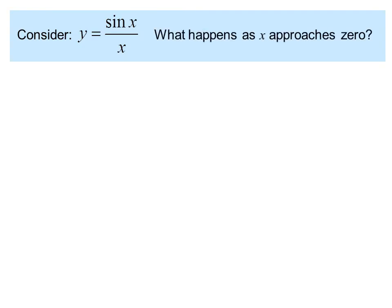Consider y equals sine x over x. What happens as x approaches 0? We see that we can't just plug in x equals 0 because we have a divide-by-zero error.